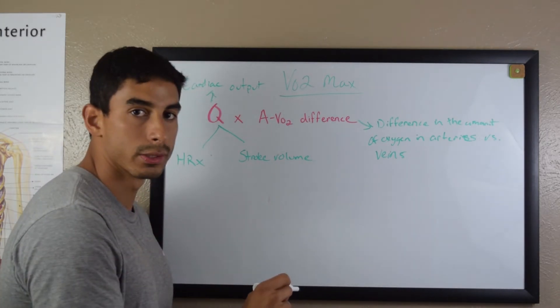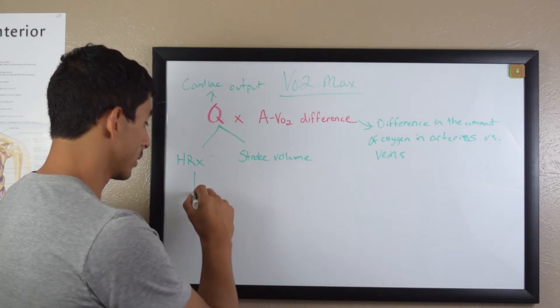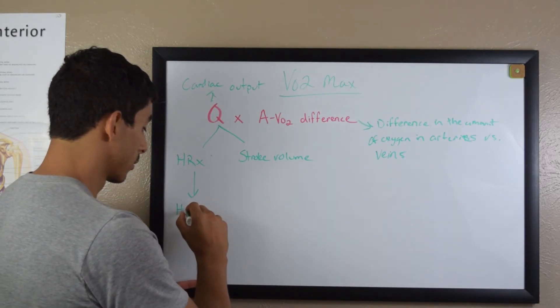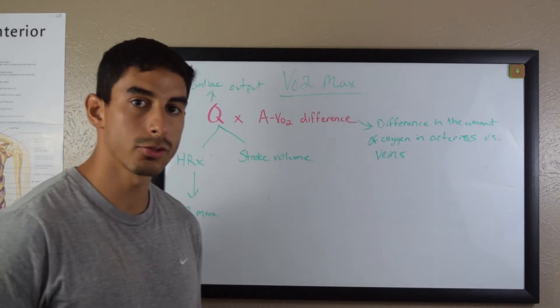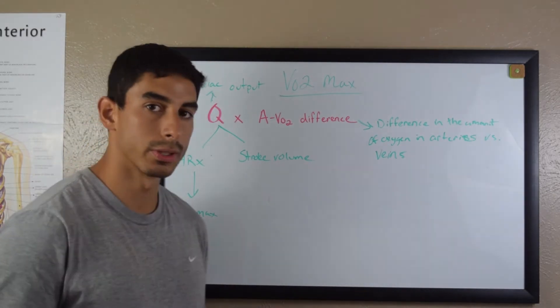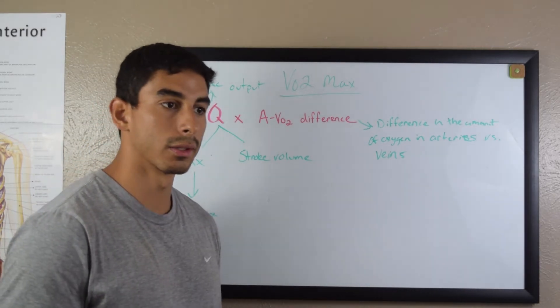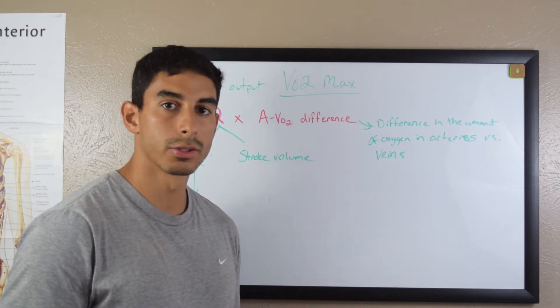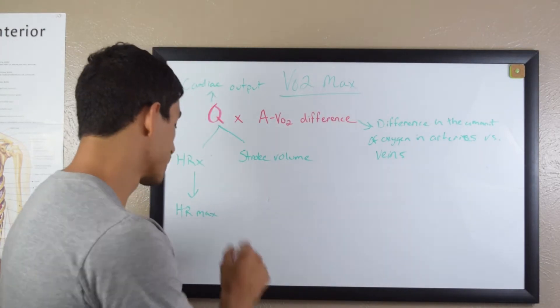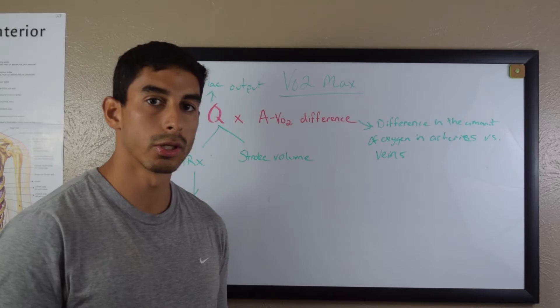When you're doing VO2 max, maximum heart rate is pretty much stable. So when someone increases their VO2 max, you're not going to see heart rate max really change. It goes down with age and it's determined by genetics. This isn't something that you train. You're not going to increase your heart rate max.